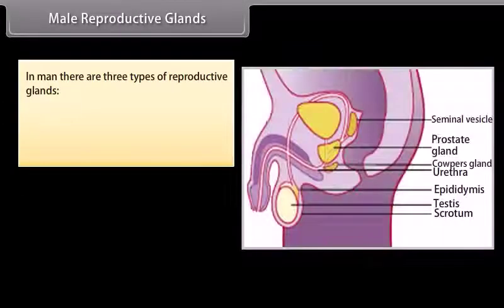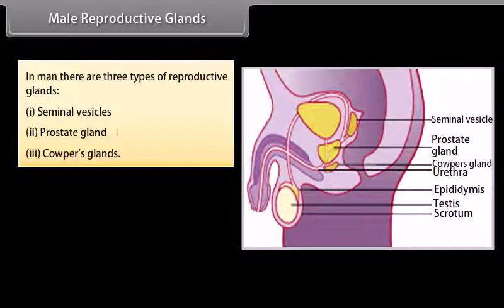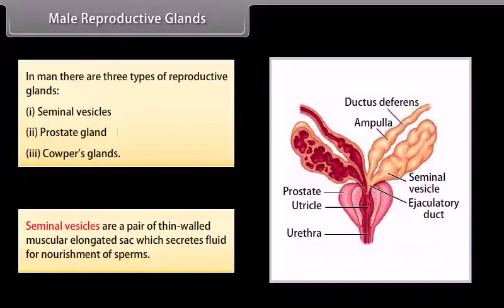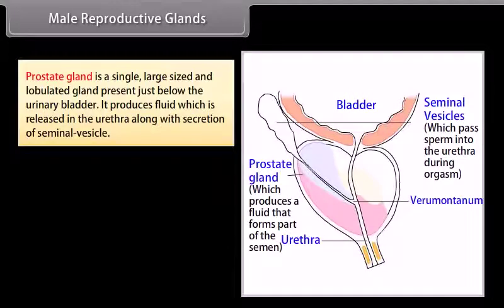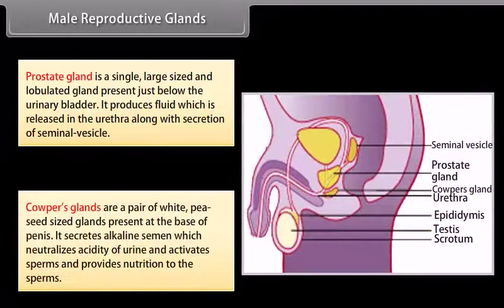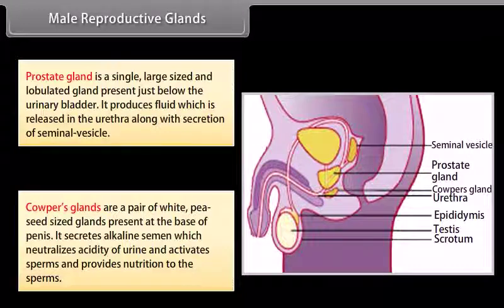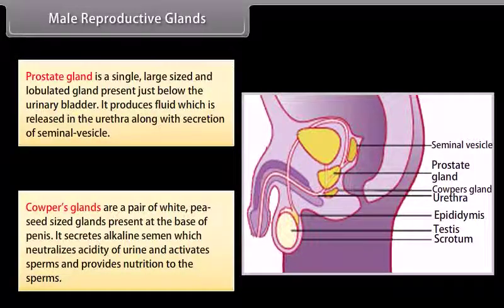In males there are three types of reproductive glands: seminal vesicles, prostate gland, and Cowper's glands. Seminal vesicles are a pair of thin-walled muscular elongated sacs that secrete fluid for nourishment of sperms. The prostate gland is a single large lobulated gland below the urinary bladder that produces fluid released into the urethra. Cowper's glands are a pair of white pea-sized glands at the base of the penis that secrete alkaline semen, which neutralizes acidity of urine, activates sperms, and provides nutrition to them.